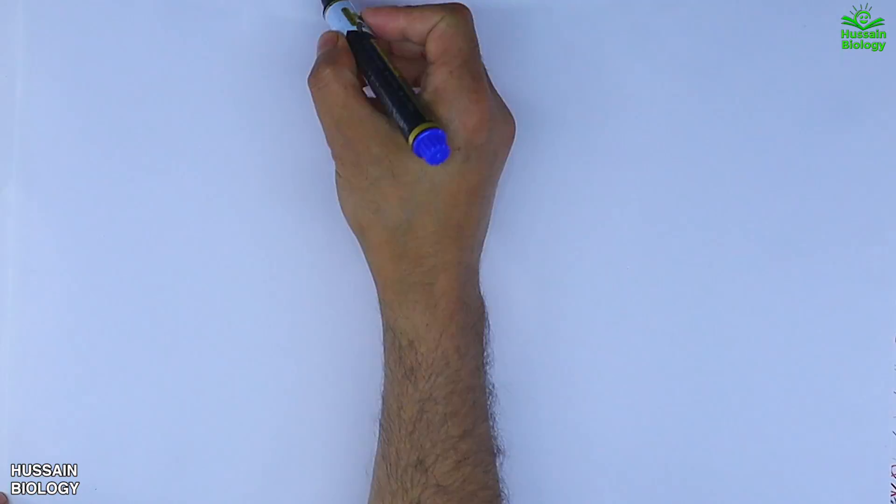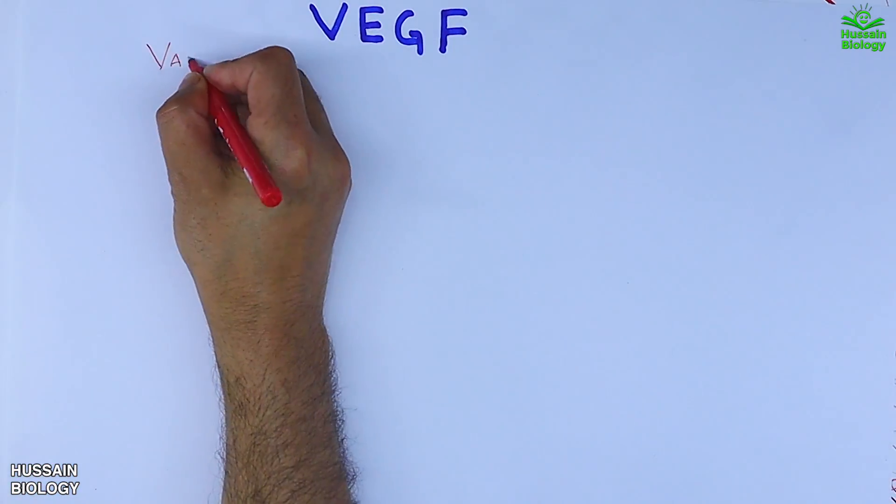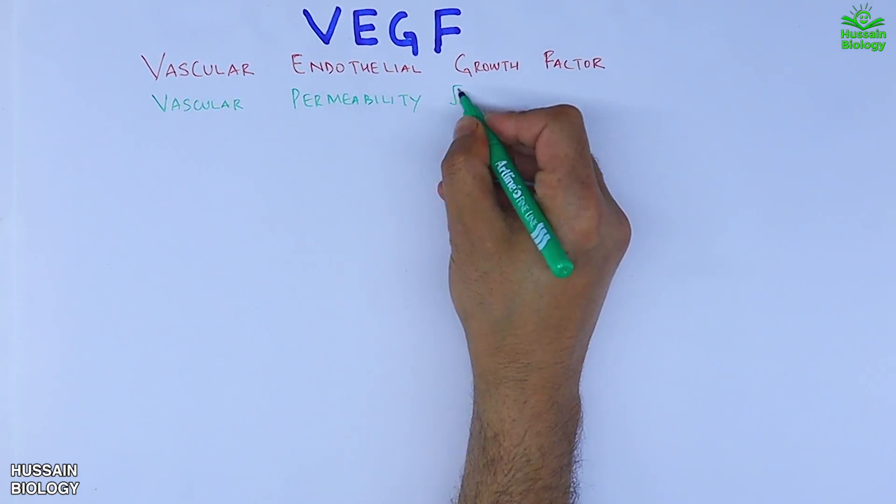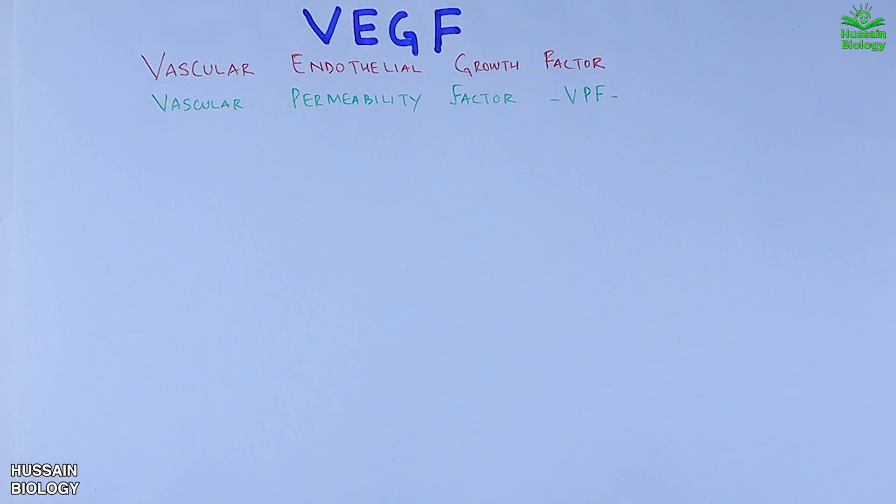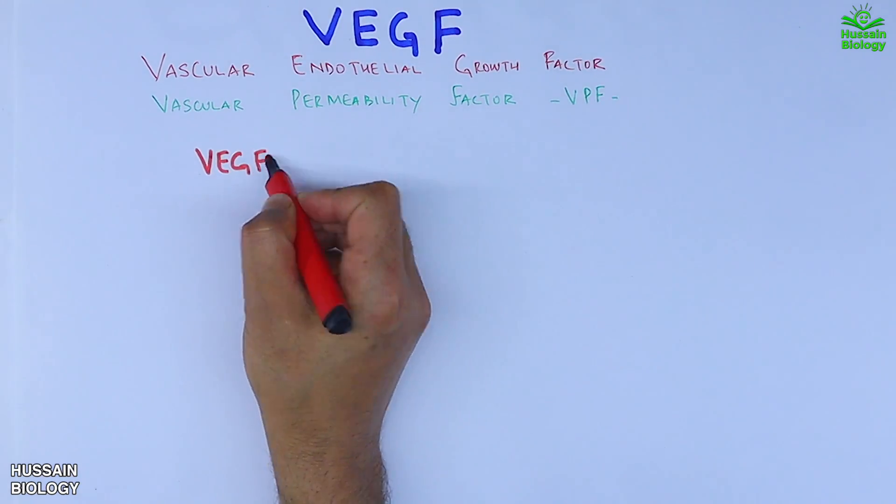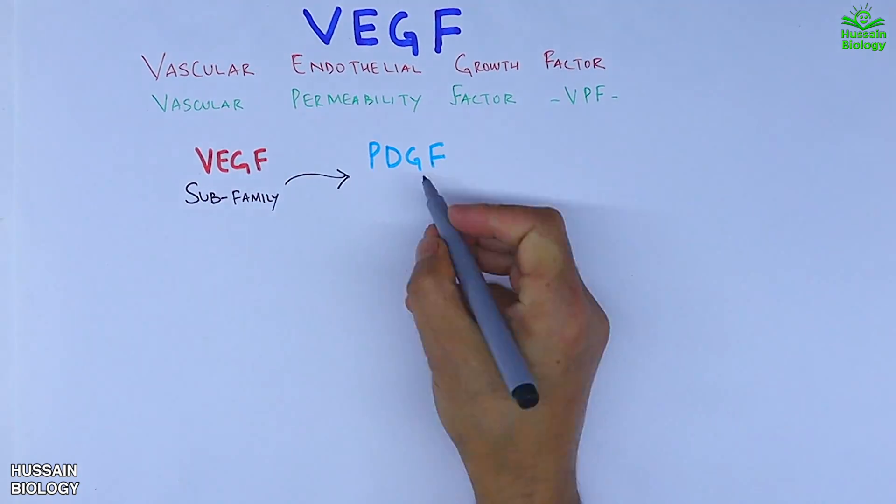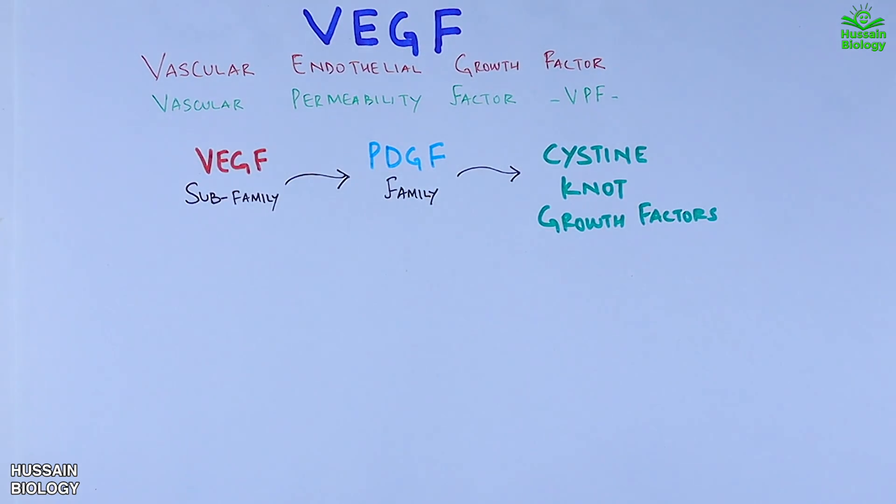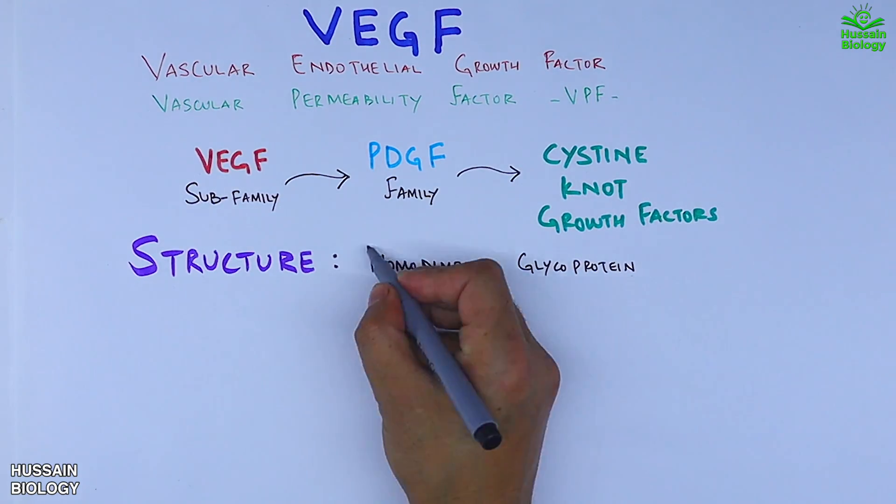In this video we'll discuss VEGF, vascular endothelial growth factor, also known as vascular permeability factor. It is a signaling molecule involved primarily in angiogenesis and vasculogenesis. VEGF is a sub-family of PDGF family, which in turn is from cysteine knot growth factors. The structure of VEGF protein is a homodimer glycoprotein.